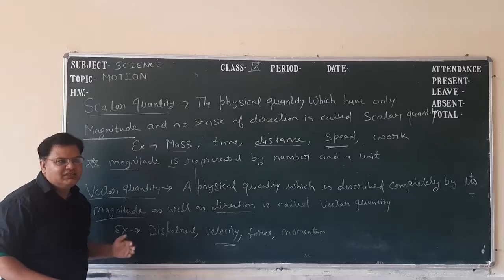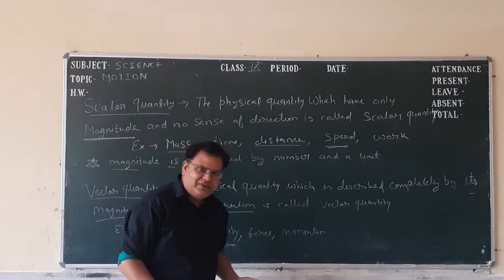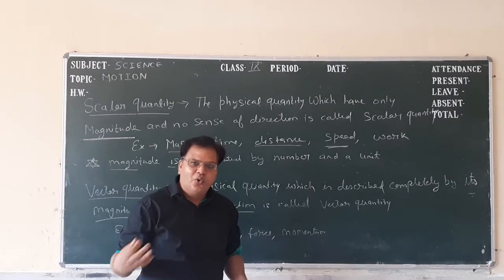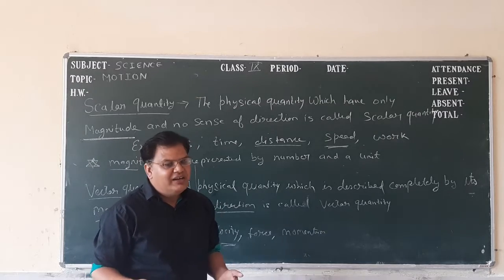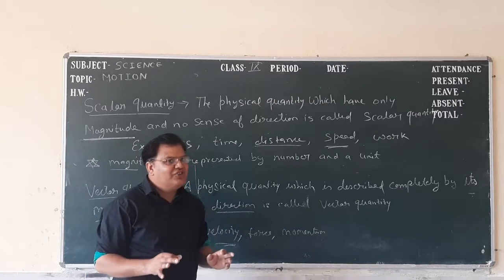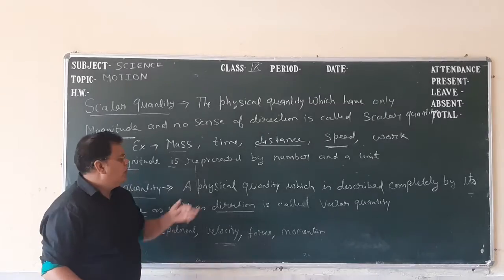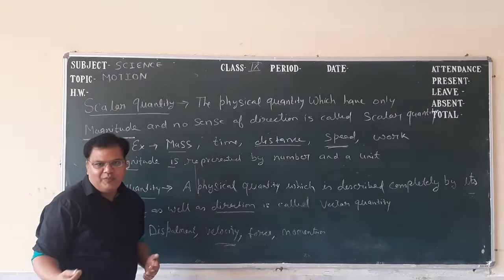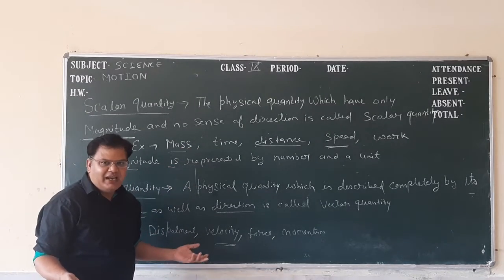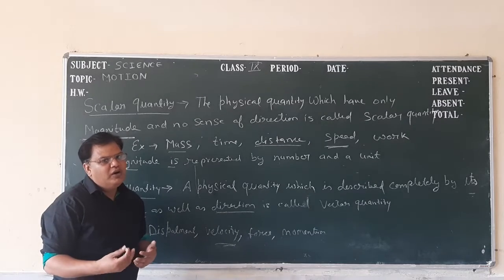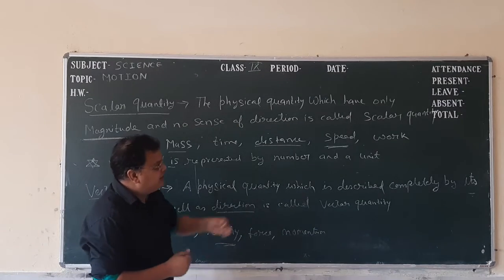Example: mass. Mass means 5 kg mass, 2 gram mass, 10 kg mass — that means mass gives only magnitude, it gives only value. Time: 4 o'clock, 5 o'clock — it has no direction. It only gives you a magnitude, that means a value.